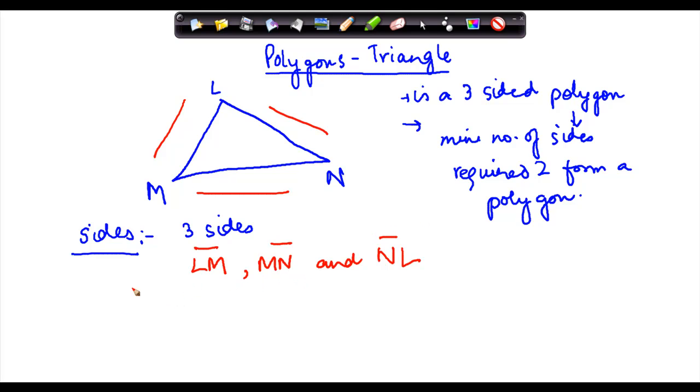Similarly, there are three angles in the triangle. The first angle can be written as angle LMN or simply angle M, whichever way you like it. Then you have this angle, which is MNL, or simply angle N.